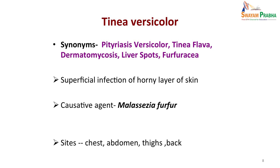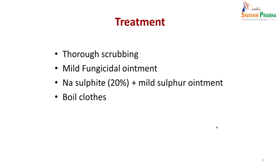Tinea versicolor is a superficial infection of the horny layer of skin caused by Pityrosporum orbiculare. The most commonly involved sites are the chest, abdomen, thighs, and back. The patient comes mainly because of the cosmetic problem of these patches increasing over time. Treatment involves thorough scrubbing and applying mild fungicidal ointment such as sodium sulfide 20% plus mild sulfur ointment or other fungicidal preparations. The patient must keep clothes separate, boil them, and understand that treatment may take weeks.